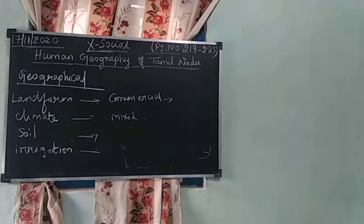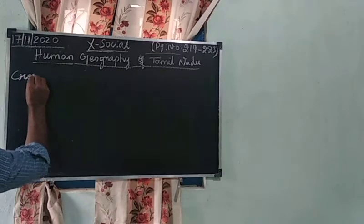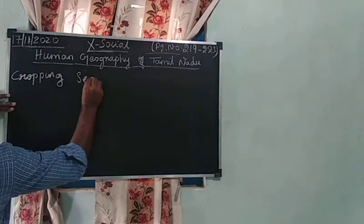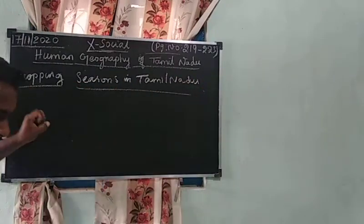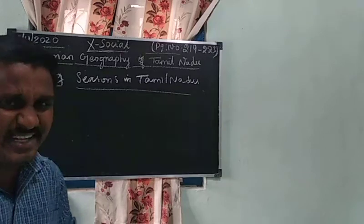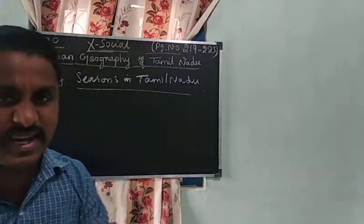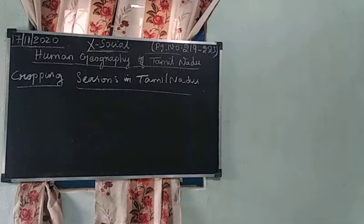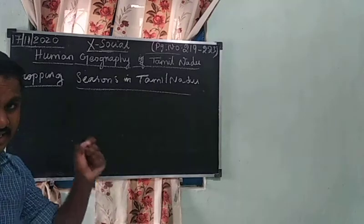Next is cropping seasons in Tamil Nadu. The first season is Sornawari — Chithirai patam, April to May. The next is Sambha — Aadi patam, July to August. The next is Navarai, which goes up to December. These are the cultivating seasons in Tamil Nadu.